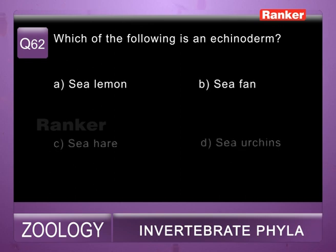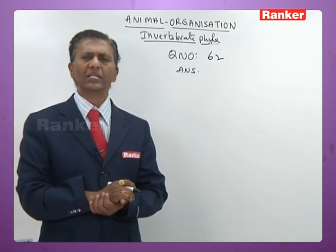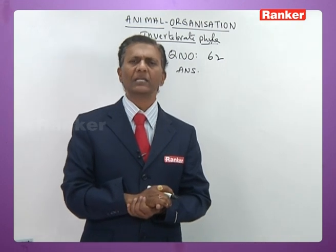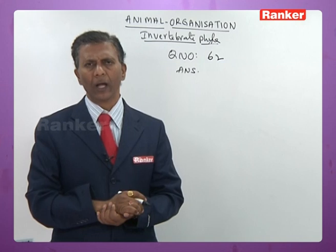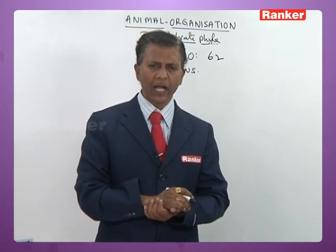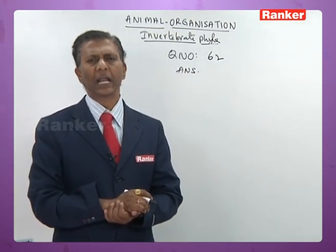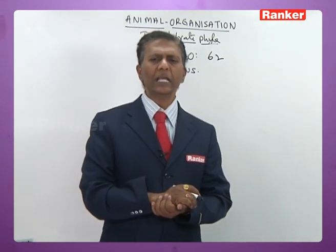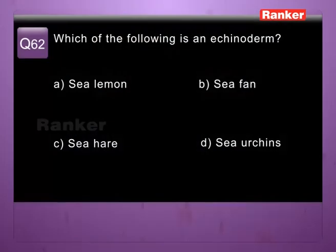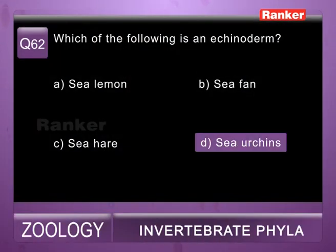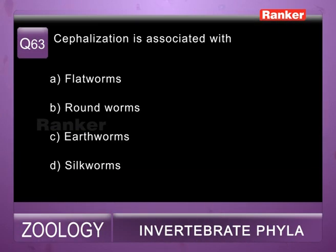Question sixty-two: which of the following is an echinoderm — a) sea lemon Doris (Mollusca), b) sea fan Gorgonia (Cnidaria), c) sea hare Aplysia (Mollusca), d) sea urchin (Echinodermata). Sea urchin belongs to Echinodermata. So sixty-second question correct answer is d.